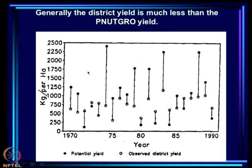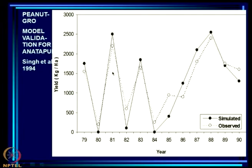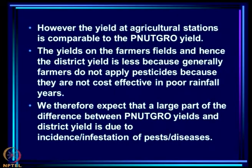The district yield is generally much less than the PeanutGrow yield. When PeanutGrow yields are reasonable, say above 1000, the district yield is less than the PeanutGrow yield by a very large margin. The yield at agricultural stations, however, is comparable to PeanutGrow yield. By and large, PeanutGrow captures the variability of yield at agricultural stations.